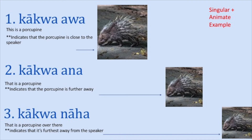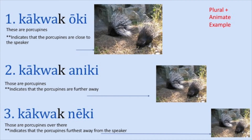This is an example for singular animate nouns. In this next example we see demonstratives for plural animate nouns. The first one, the porcupines are closest to the speaker. The next one, they're a little bit further away from the speaker. And then the last picture shows that they're a lot further away.